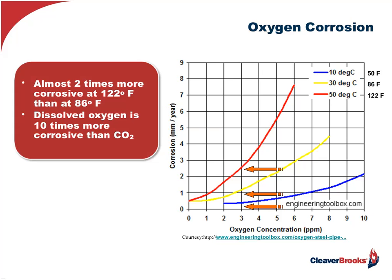Speaking of air — it's extremely deleterious to piping and boilers. The corrosiveness of oxygen increases with temperature. Looking at corrosion on the vertical axis and oxygen concentration on the horizontal axis, at 3% O2, you can see how the corrosion increases with temperature at 50, 86, and 122 degrees. Also keep in mind that dissolved oxygen is 10 times more corrosive than carbon dioxide.